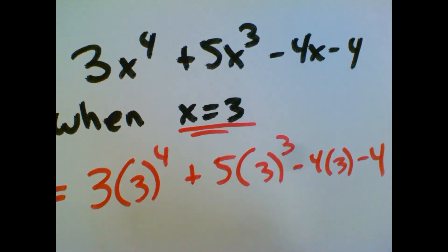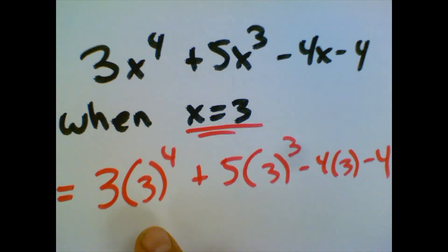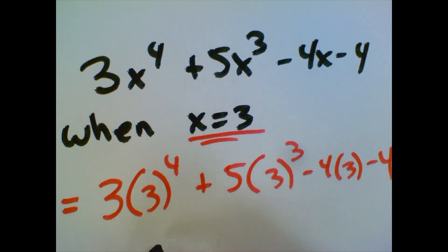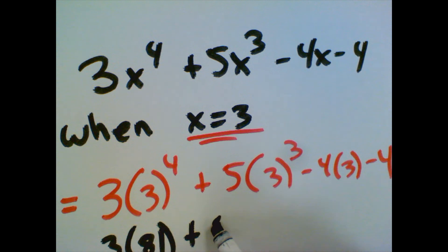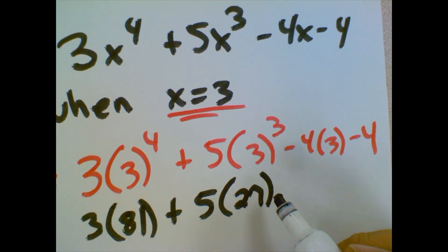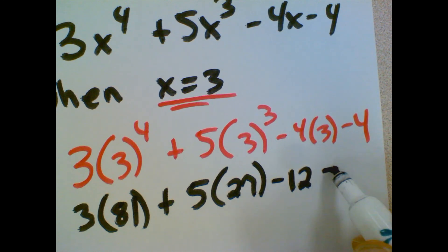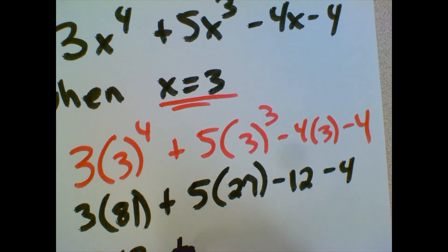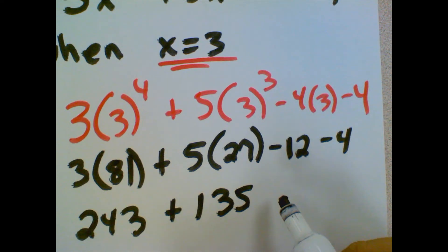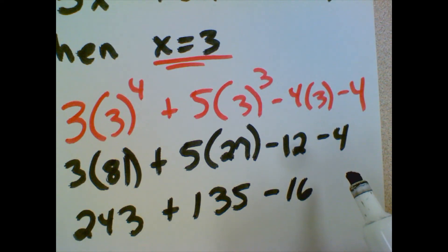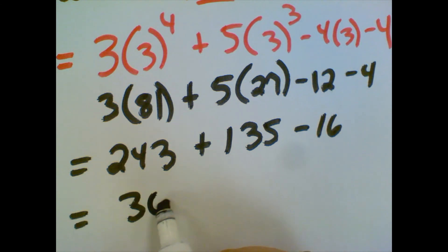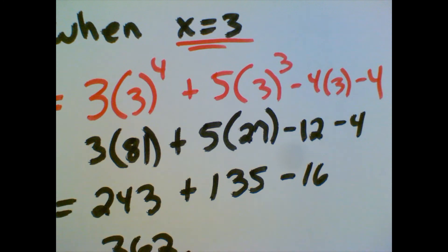So this just comes down to your order of operations. So we do exponents first. There's no parentheses that we've got to worry about as far as operations inside. So 3 to the 4th power would be 3 times 3 times 3 times 3, which is 81, times that 3, plus 5 times 3 times 3 times 3 is 27. So that becomes 243, plus 135, minus 16. I'll just combine those right away, which will equal 362 if we add all that up together. So some of your problems will ask you to evaluate a polynomial for certain numbers for x, and that's really essentially all you need to do.